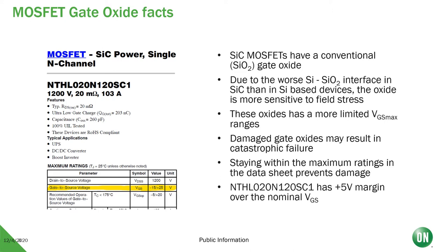First, let's talk about the silicon carbide MOSFET gate dielectric. Silicon carbide MOSFETs contain a conventional silicon dioxide. As it is not a naturally grown oxide, the interface between the semiconductor material and the oxide is less stable than in silicon devices, and the oxide is therefore more sensitive to field stress. Any applied overvoltage may lead to trapping and degradation effects that will eventually lead to gate leakage, which may result in a short circuit event with catastrophic results to the system. To prevent any degradation or damage, the voltage on the gate needs to stay within the maximum limits given in the device datasheet. In this example of an ON Semiconductor 1200V 20mΩ silicon carbide MOSFET, the margin from the nominal operation conditions is positive 5V.